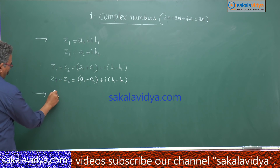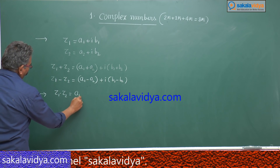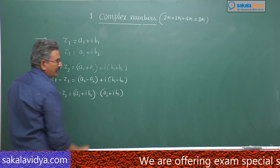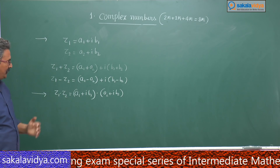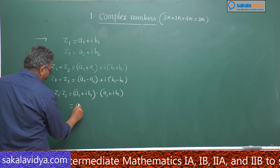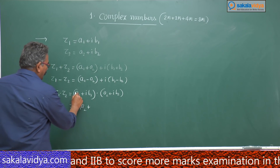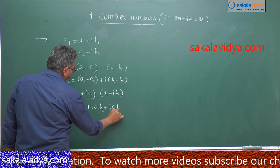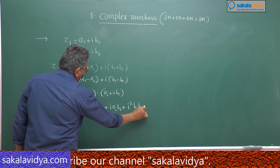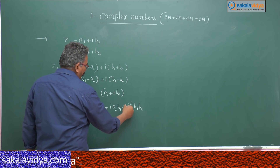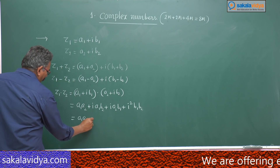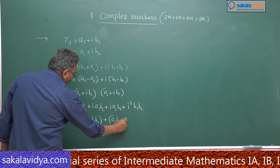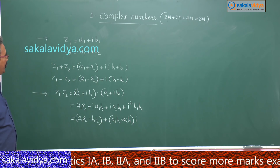How do we multiply two complex numbers? z1 × z2 means (a1 + ib1) multiplied by (a2 + ib2). Expanding: a1·a2 + i·a1·b2 + i·a2·b1 + i²·b1·b2. Since i² = −1, this becomes (a1·a2 − b1·b2) + i(a1·b2 + a2·b1). This is the product of two complex numbers.